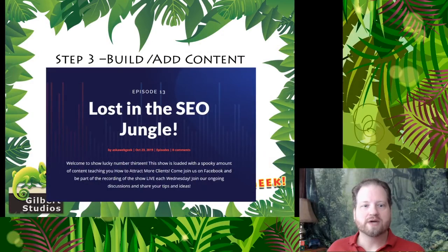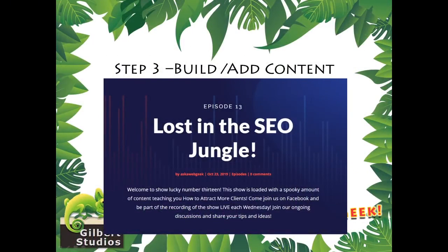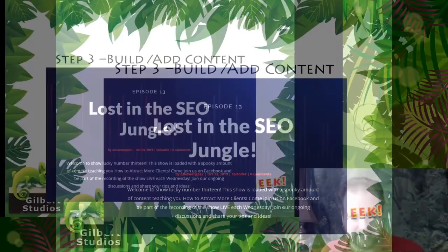Step one was the Google Search Console to register your website. Step two was Google My Business to register your business, which also has a link back to your website — and Google will recognize that. The more quality links you can get to your website from reputable sites, the better — having a link from Google's own map listing is a good one. And the third step is to build content. You want to build up your content on your website over time. Those first two steps you do immediately after launching your website. This third step is what you do over the next weeks, months, and years — adding content, building content onto your website. I'm referencing episode 13, which I call 'Lost in the SEO Jungle.'